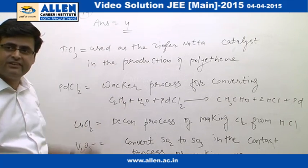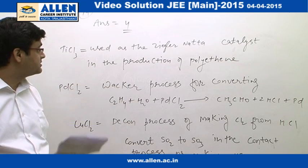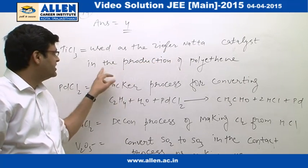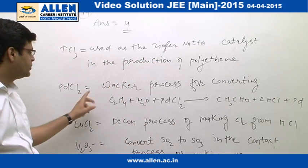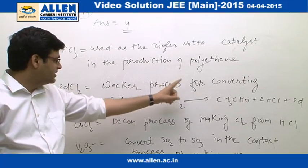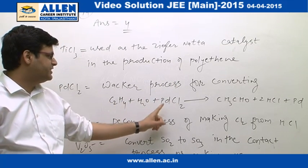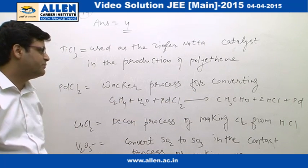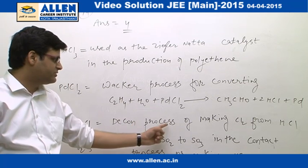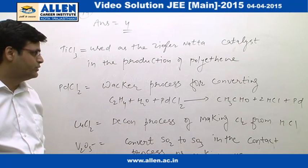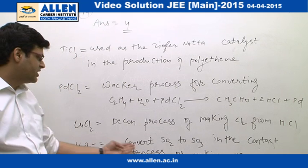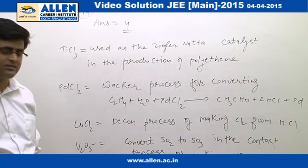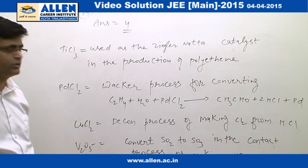Question No. 74: Match the catalyst to the correct process. TiCl₃ — Ziegler-Natta catalyst in the production of polyethylene. PdCl₂ — Wacker process for converting C₂H₄ + H₂O → CH₃CHO + 2HCl + Pd. CuCl₂ — Deacon process for making Cl₂ from HCl. V₂O₅ — converts SO₂ to SO₃ in the Contact process for making H₂SO₄. So the answer is the 4th option.